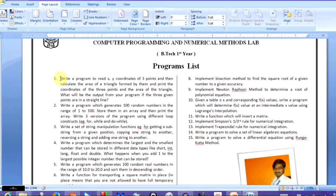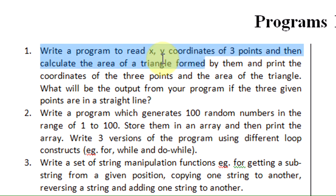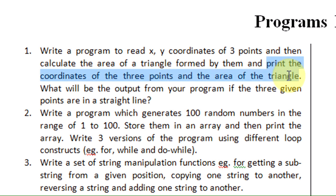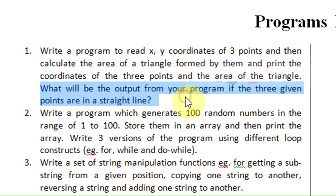The first program states: write a program to read the x, y coordinates of three points and calculate the area of the triangle. We are required to print the coordinates of the three points and the area of the triangle. It also asks: what will be the output if the three given points are on the same straight line?